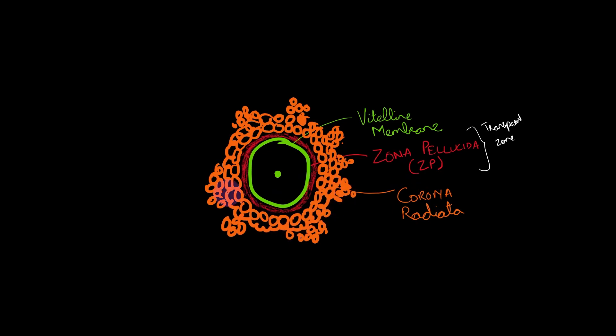So these corona radiata cells are actually the follicular cells which occupy the cumulus oophorus. Some others also call this the cumulus oophorus instead of corona radiata. So from inside to outside in order the structures are vitelline membrane, zona pellucida and corona radiata.